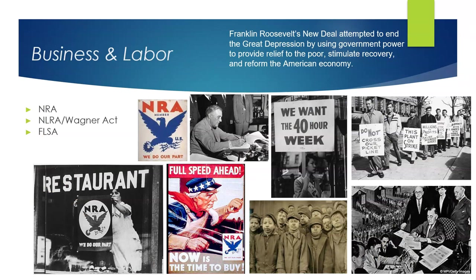For labor, there were also several key pieces of legislation that were part of the New Deal. The National Recovery Administration hoped to establish standardized labor practices across various industries. Its efforts included setting a minimum wage, defining specific working hours, and implementing standards for all industries engaged in interstate commerce. However, the NRA faced a significant setback when the Supreme Court declared its policies unconstitutional, citing concerns over excessive government intervention.